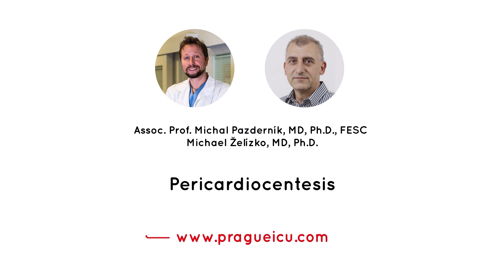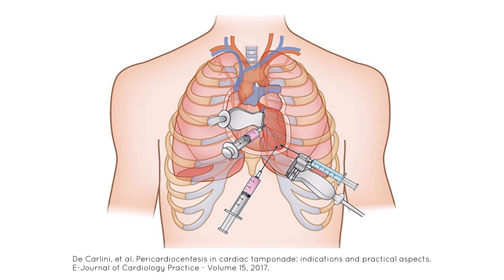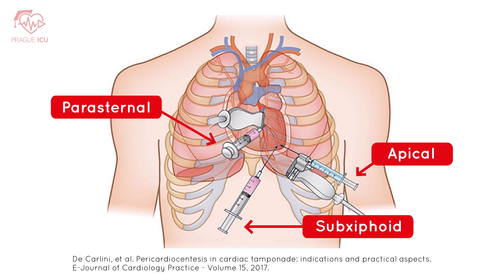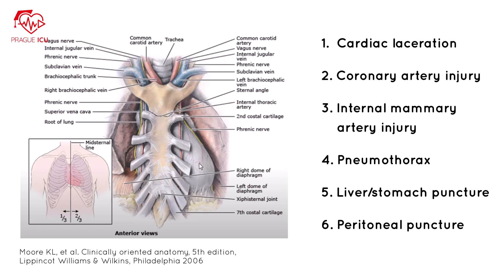Hi guys, this is Mikhail from Praga ICU, and today I will show you how to perform a pericardiocentesis. In general, there are three percutaneous access options for reaching the pericardial space: the apical, subxiphoid, and parasternal approaches. Praga ICU prefers the subxiphoid puncture under fluoroscopy; in emergency settings, you may use an echo-guided technique.